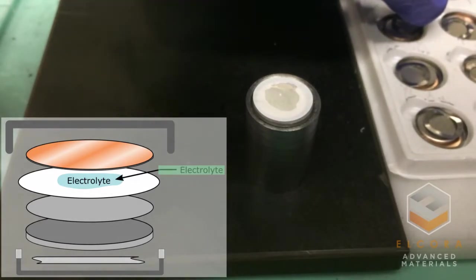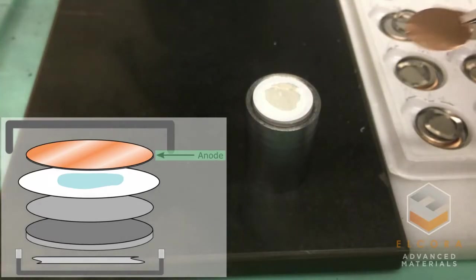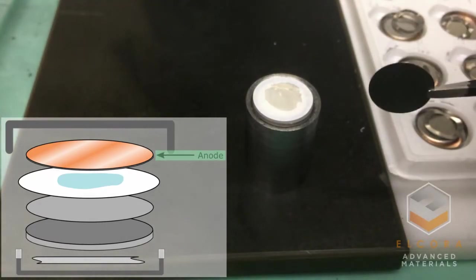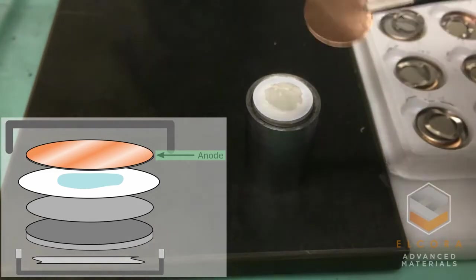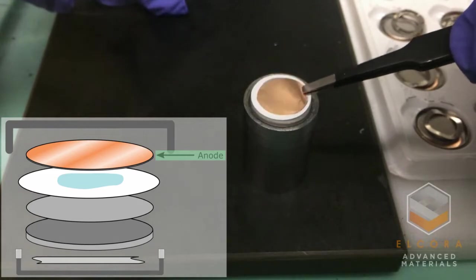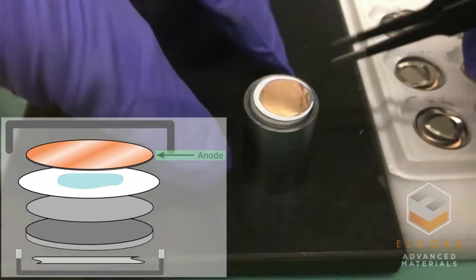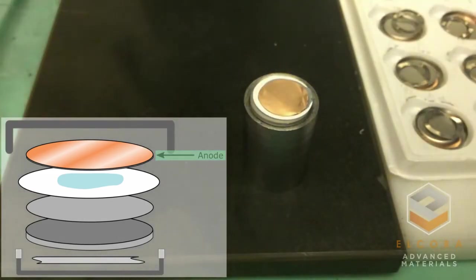Finally, I add our natural graphite anode. This anode was made by Alcora using our high quality spherical graphite and graphene. Thin copper foil was coated with anode material and cut into these electrodes, so the copper acts as a current collector for the anode.